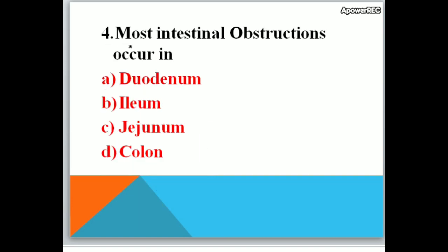Most intestinal obstructions occur in — A. duodenum, B. ileum, C. jejunum, D. colon. Correct answer is ileum. Most intestinal obstructions occur in the ileum.